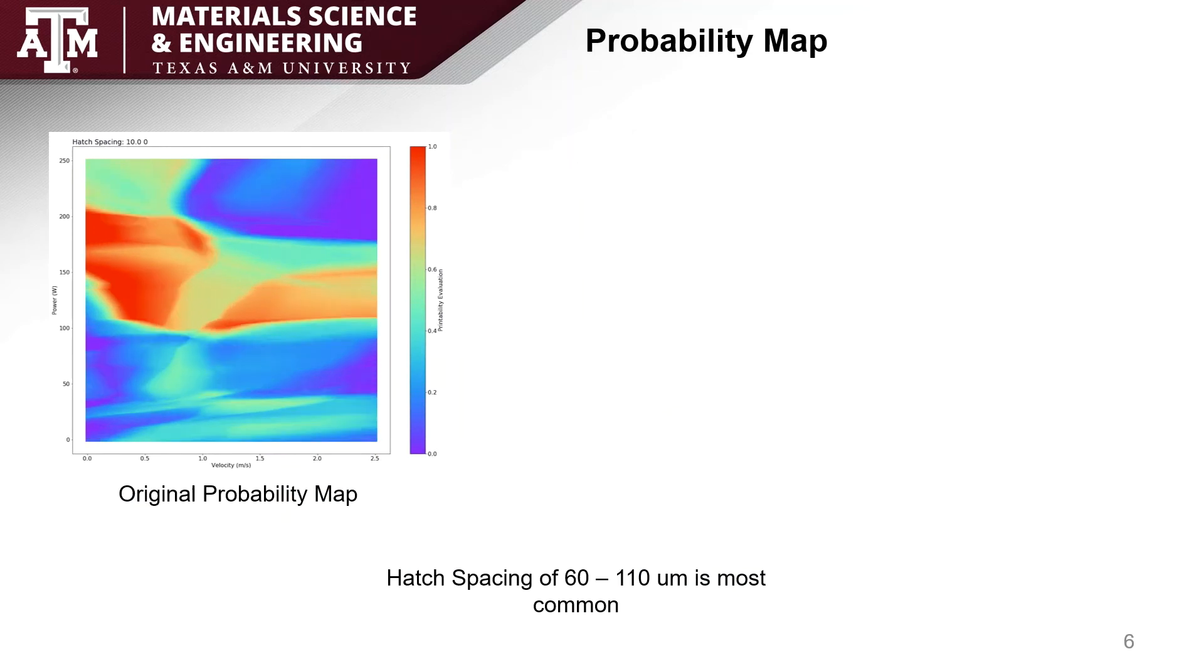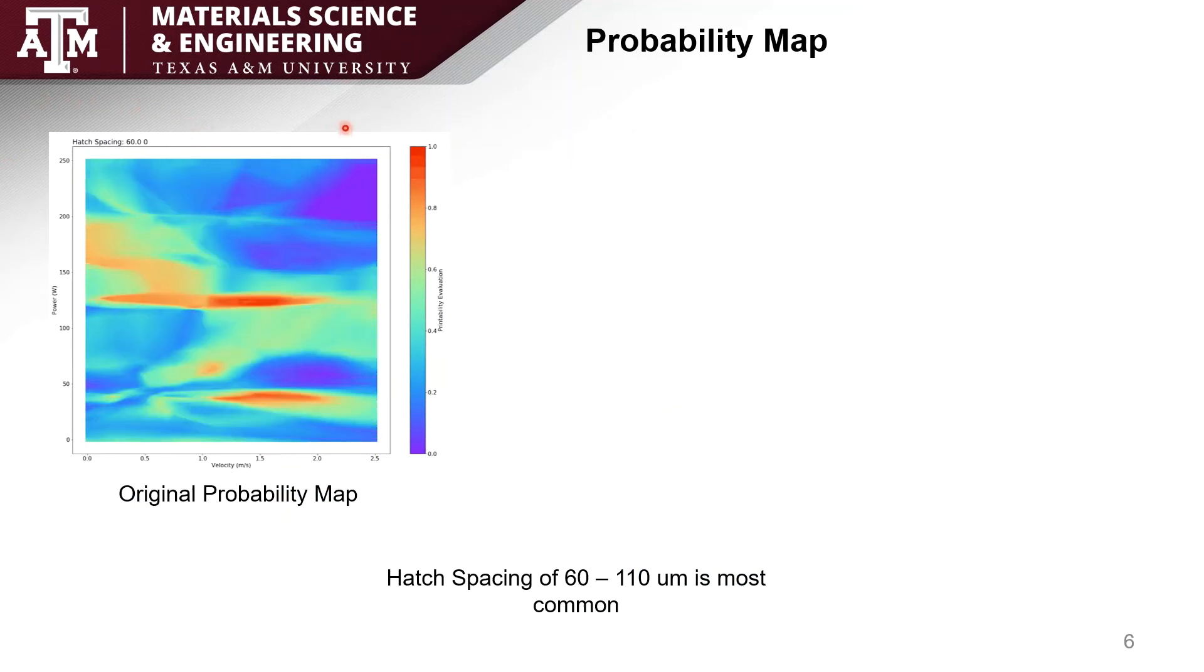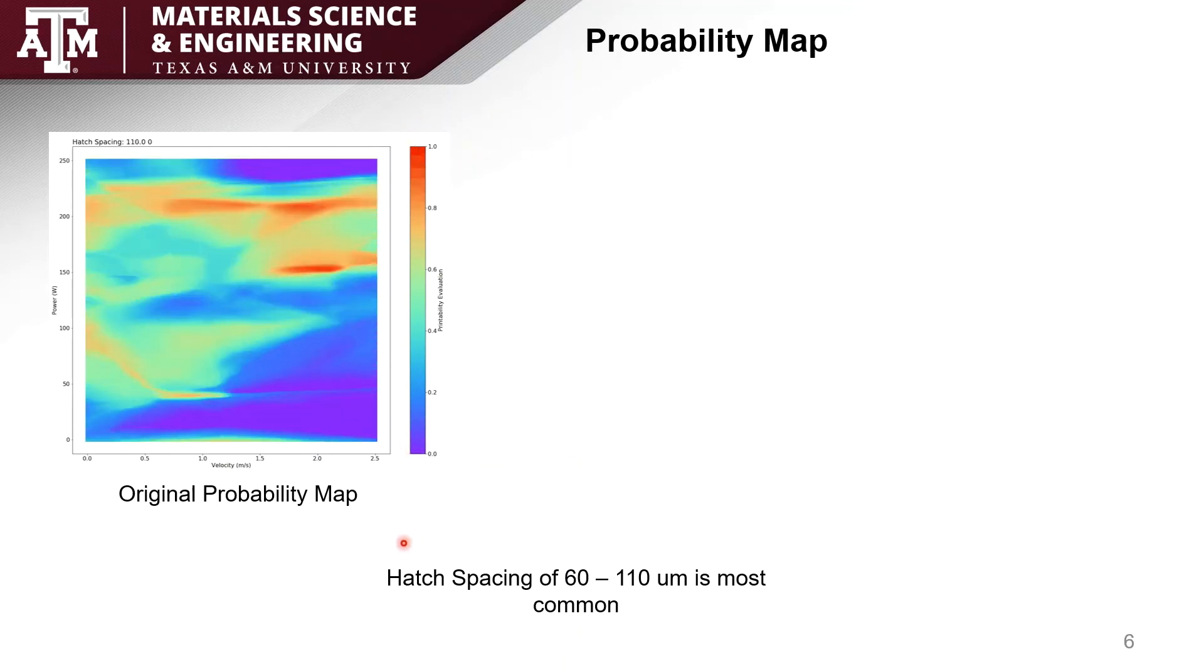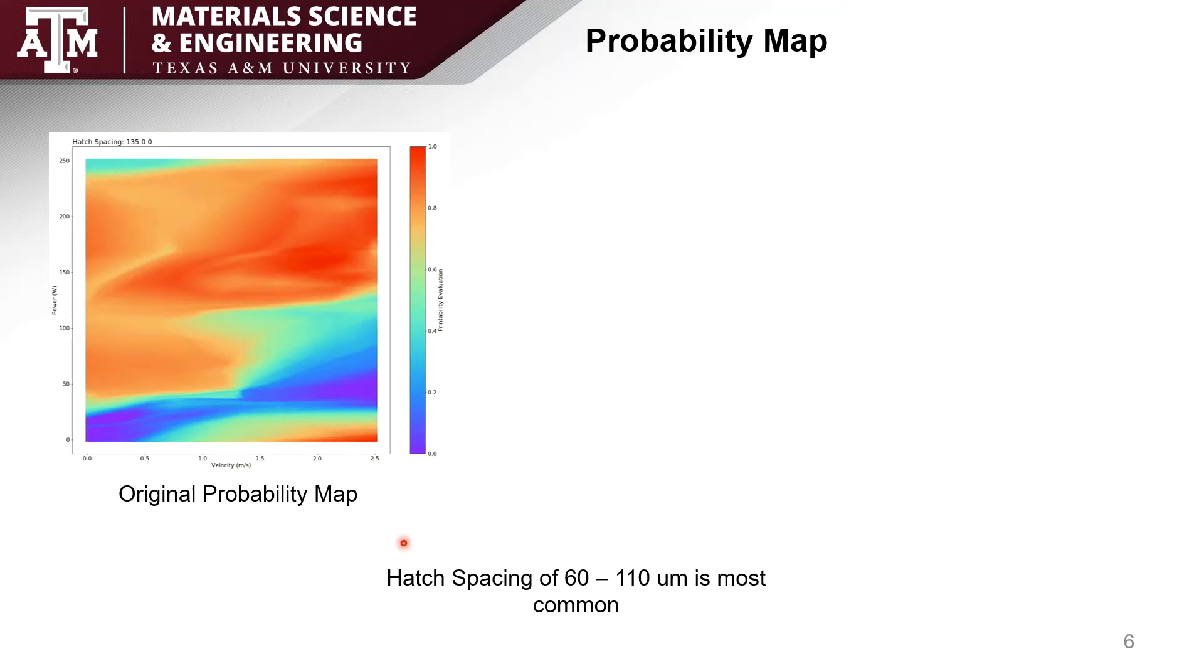This is one of the first probability maps they ended up making. It includes a hatch spacing of 0 to 150 and red indicating successful print and blue indicating unsuccessful. It's also worth mentioning a hatch spacing of 60 to 110 is the most accurate because we have the most data on it.